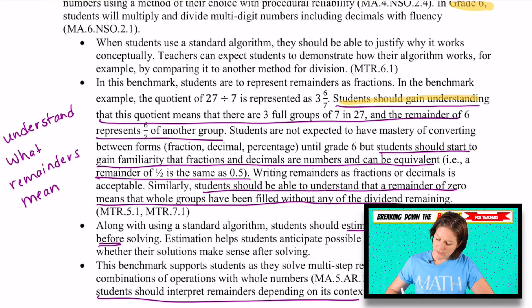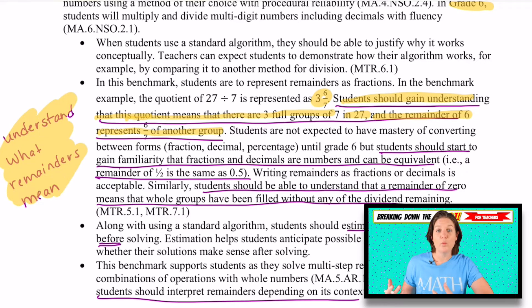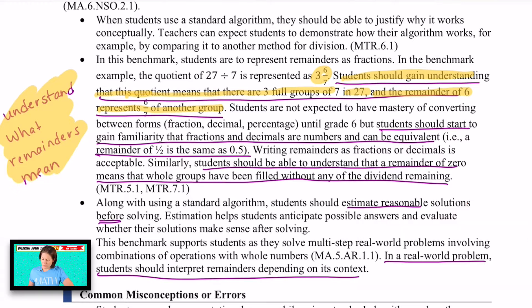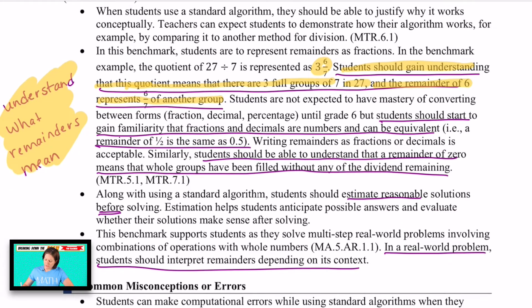Students should gain understanding that this quotient means that they're okay. So when we're looking at the example that we had, and we had a quotient of three and six sevenths, students need to be able to interpret what that quotient means. So students should gain an understanding that this quotient means that there are three full groups of seven in 27 and that the remainder of six represents six sevenths of another group. It's not a completed group yet.